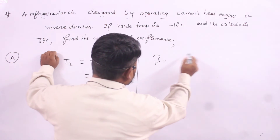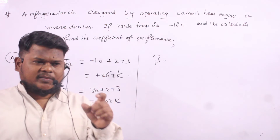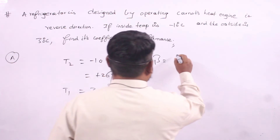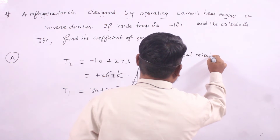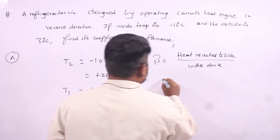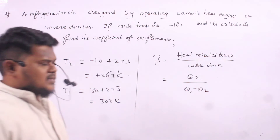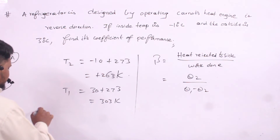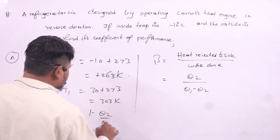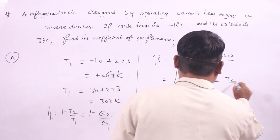The question asks for beta, the coefficient of performance. Let us recall the definition: beta is heat rejected to the sink divided by the work done. Heat rejected to the sink is Q2, and work done is Q1 minus Q2. By Carnot's theorem, efficiency equals 1 minus T2 by T1, and also equals 1 minus Q2 by Q1, so T2 by T1 equals Q2 by Q1.